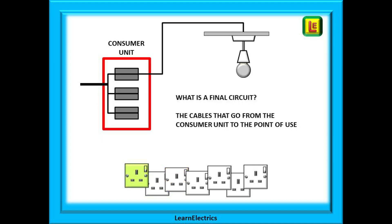The next question is: what is a final circuit? Well, imagine a lighting circuit in a house. The cables that leave the consumer unit and go to the luminaires are the last part of the journey for the electricity from the power station to the point of use — in other words, the light. That piece of cable in the house is the final part of the journey. There are no more fuses or consumer units. This is the final leg — this is a final circuit.